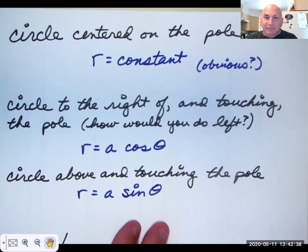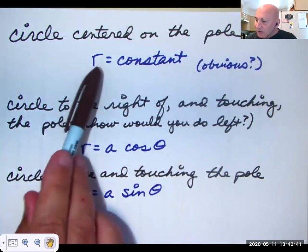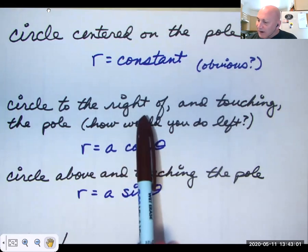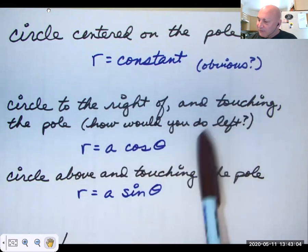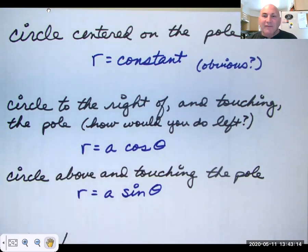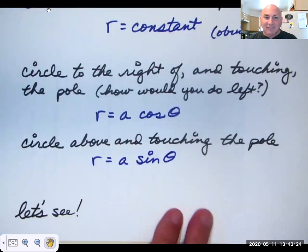How about a circle that's centered at the pole? That's R equals a constant, a radius. If the radius is five, all those points would be five units away and they would be on a circle. We have two other types that we can graph very easily in polar form. One is a circle to the right of the pole, but it touches the pole on the left side. And that's the equation R equals a cosine theta. And if you want a circle above the pole, kind of like sitting on top of the origin on the pole, that's a sine theta.